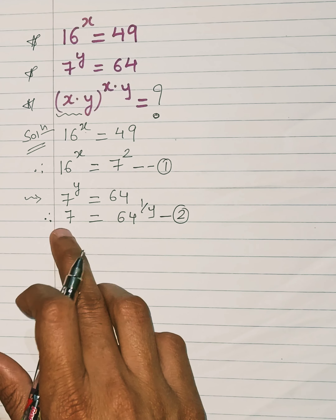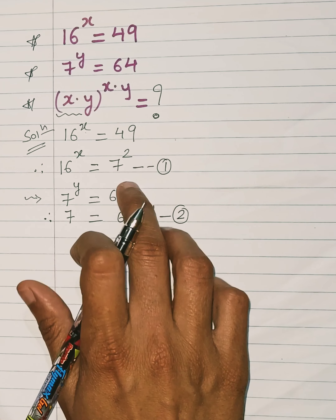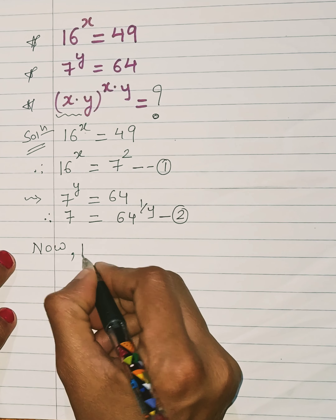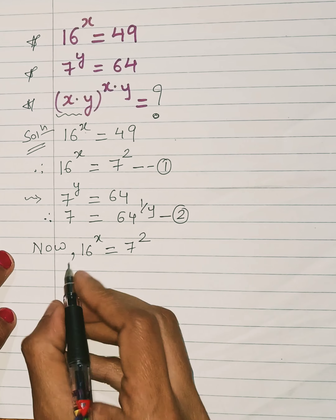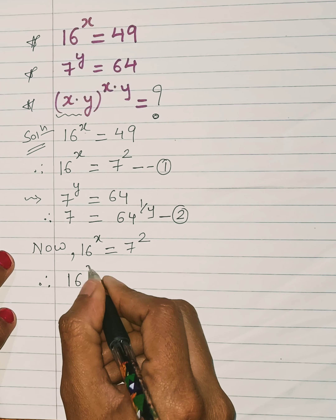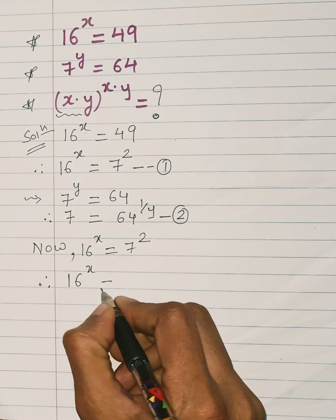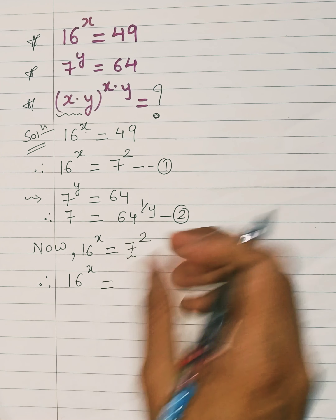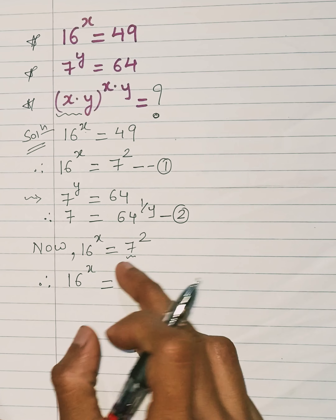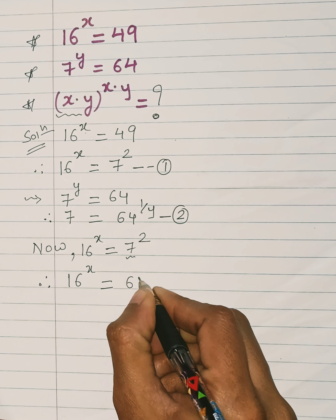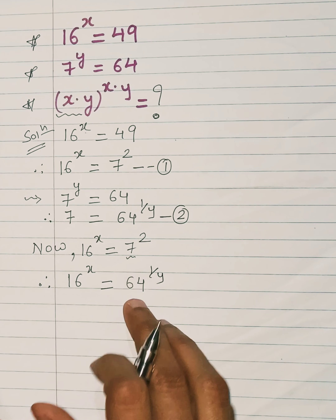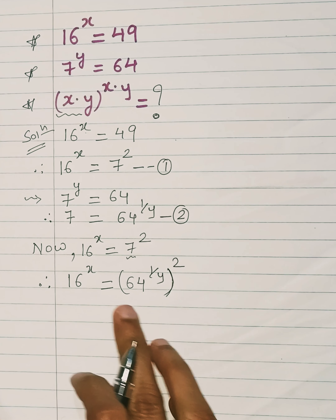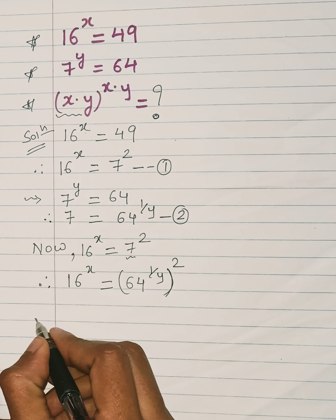Since we have 7 equals 64 raised to 1 over y from the second equation, we substitute this value of 7 into the first equation. In place of 7 squared, we write 64 raised to 1 over y, the whole quantity squared, keeping 16 raised to x on the left side.